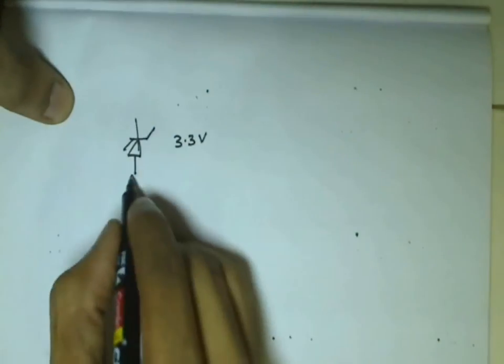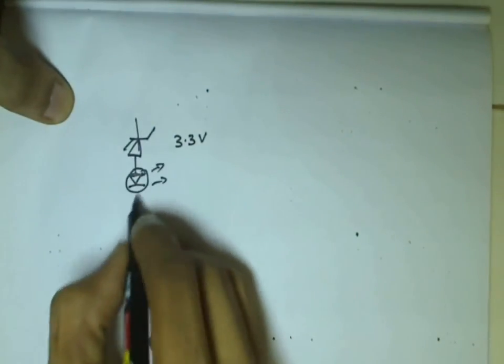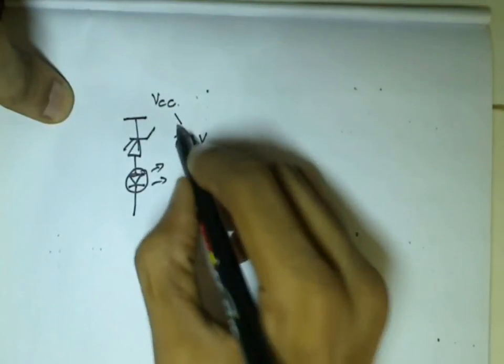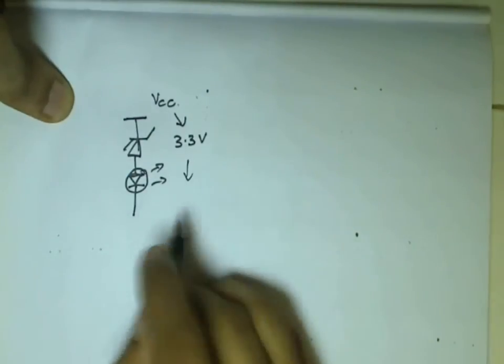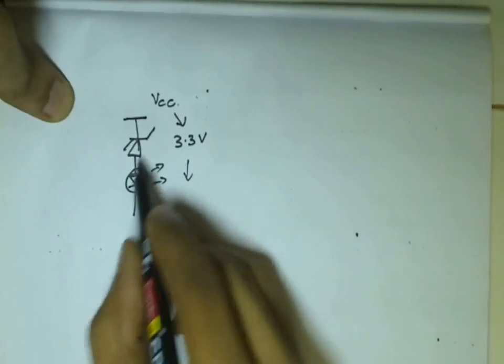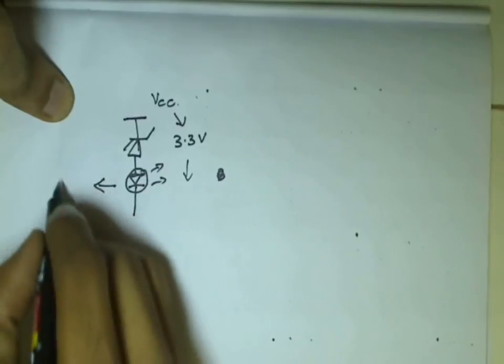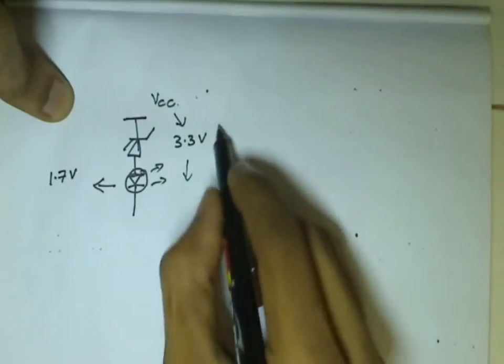We take a 3.3 volts Zener diode and connect a red LED to it. When the voltage across the Zener diode crosses 3.3 volts, it starts conducting current to the red LED. But there is also a forward bias voltage for the red LED which should be reached for it to switch on. For red LED, it would be around 1.7 volts.